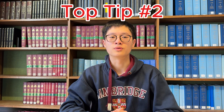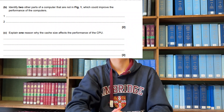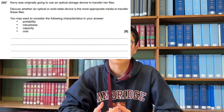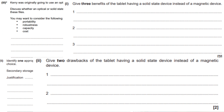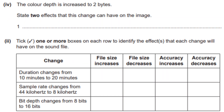Tip number two: try to predict what types of questions will come up and spend extra time preparing for the common questions. For example, in systems architecture there will always be a question on how different factors affect CPU performance. In memory and storage, there'll be comparison questions on the benefits and drawbacks of different storage devices, and also what can affect the quality and size of images and sound.